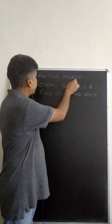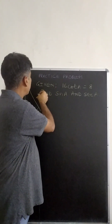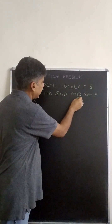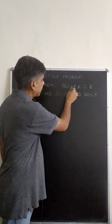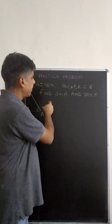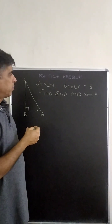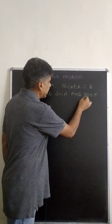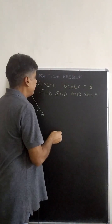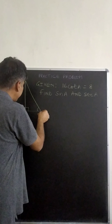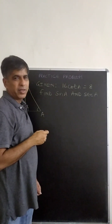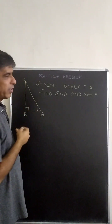This is a practice problem from introduction to trigonometry where we have to find sin A and sec A. We are given 16 cot A equals 8. We will use trigonometric identities and trigonometric ratios to calculate sin A and sec A. We can take two approaches: either draw a right angle triangle and find the ratios, or use trigonometric identities. We will go with trigonometric identities.